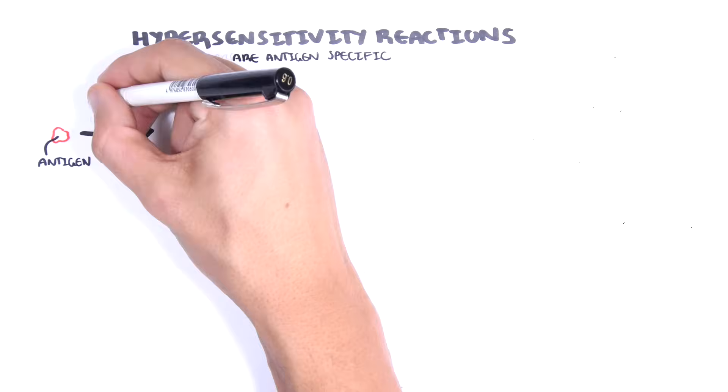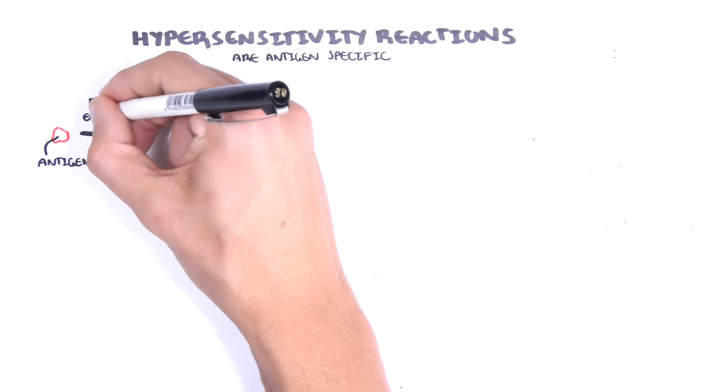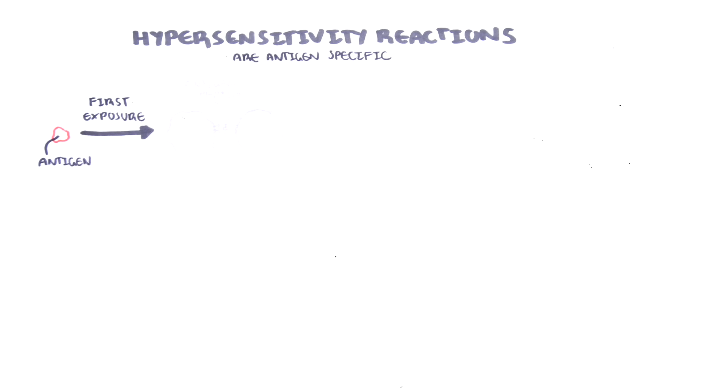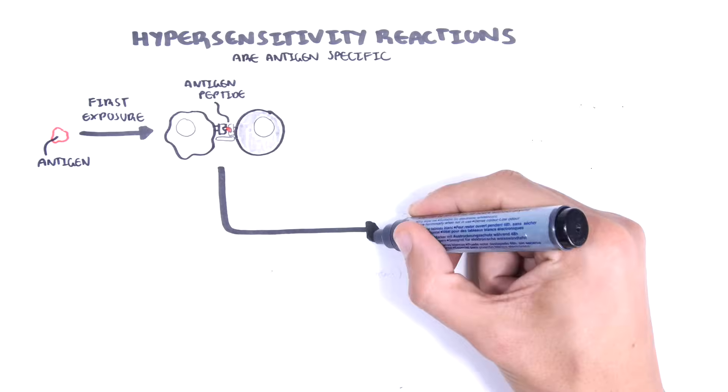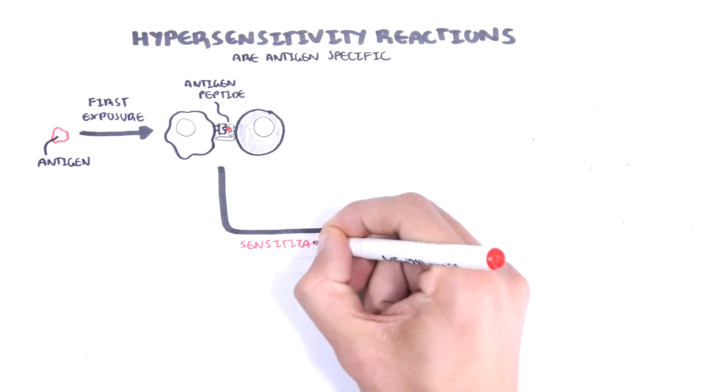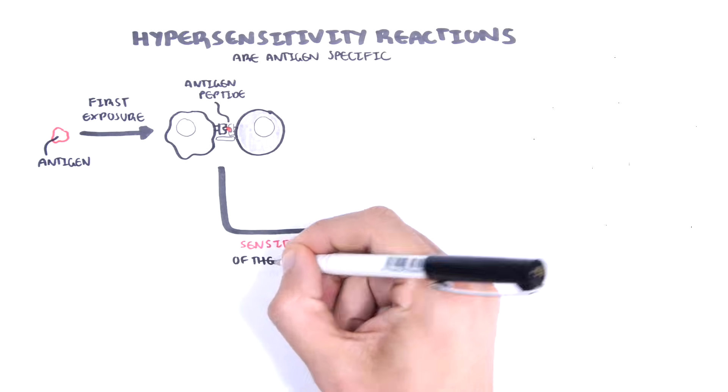In this quick example, first exposure or first contact to an external antigen, such as a drug, pollen, or food, causes the immune system to sensitize itself towards the particular antigen.